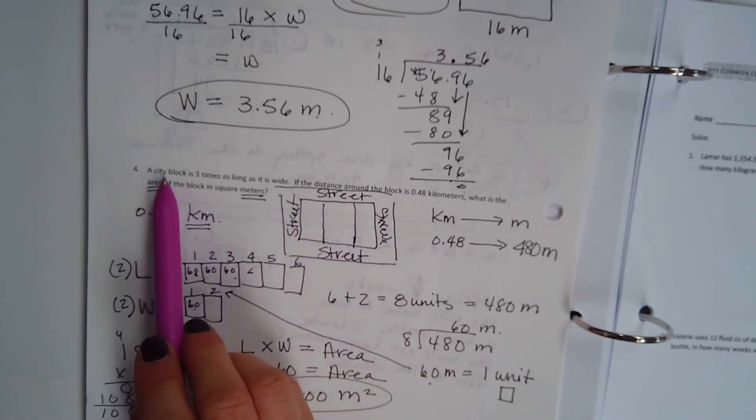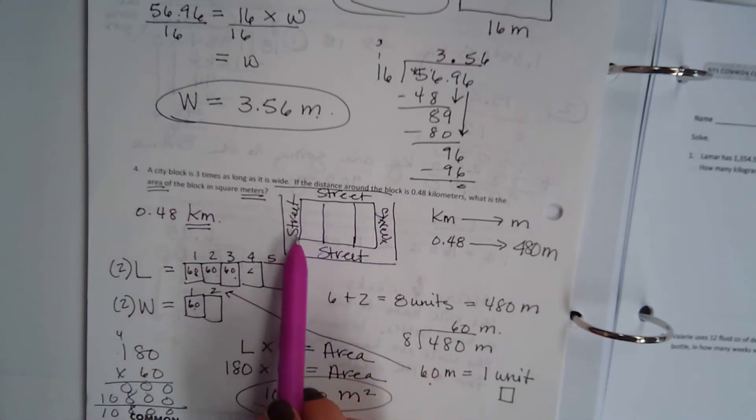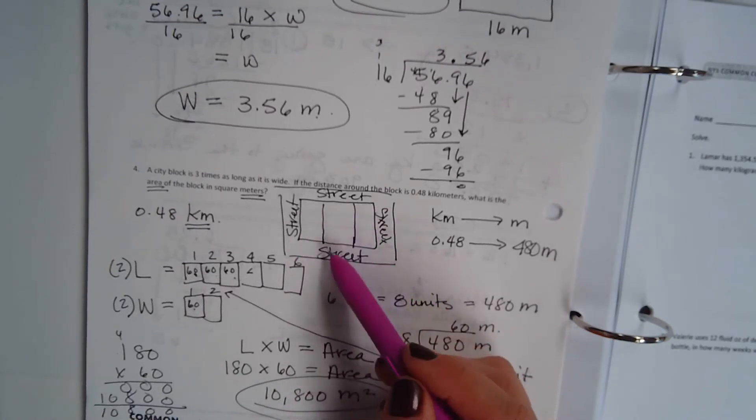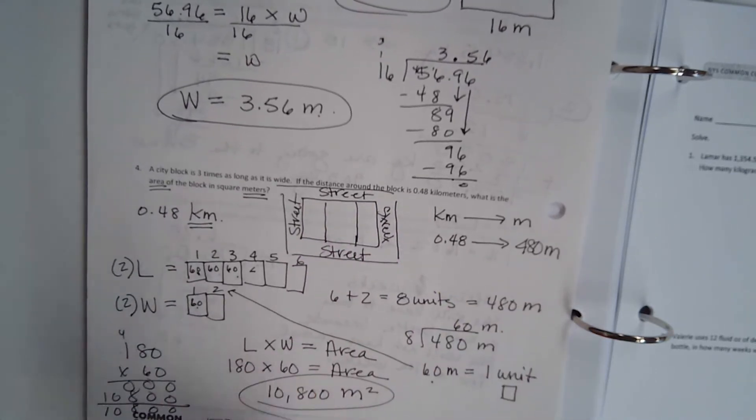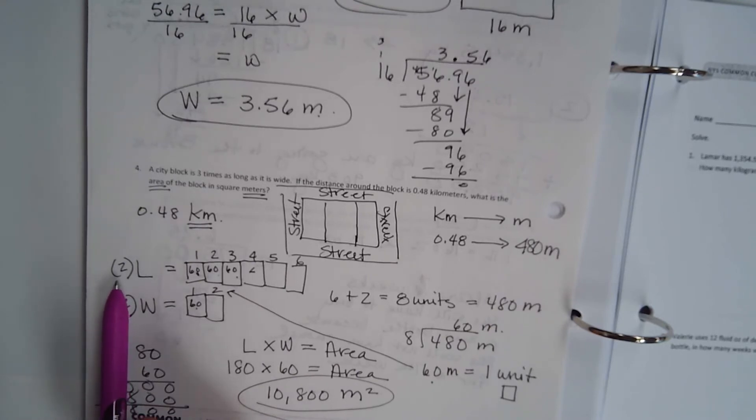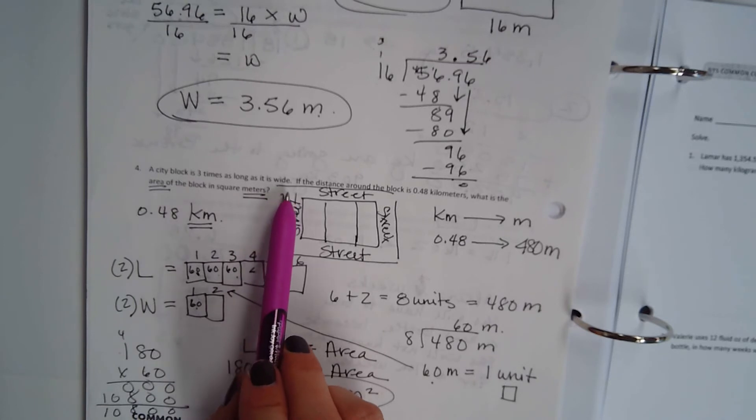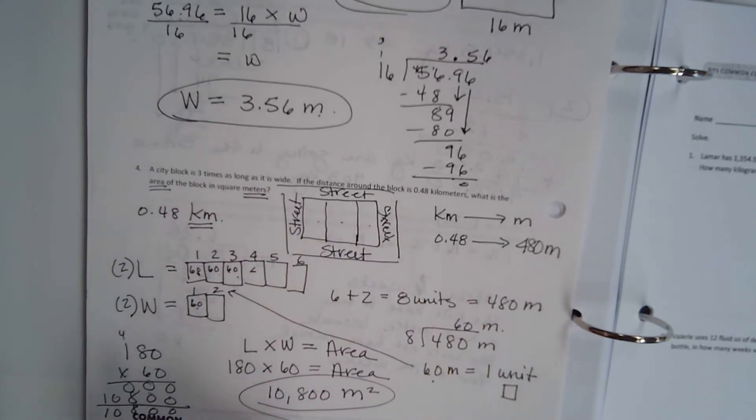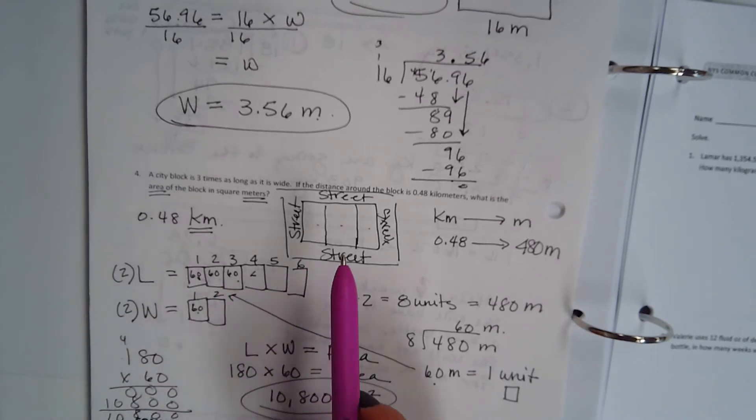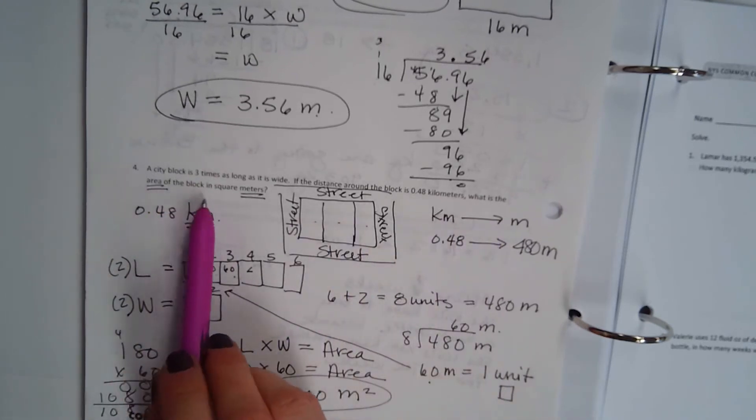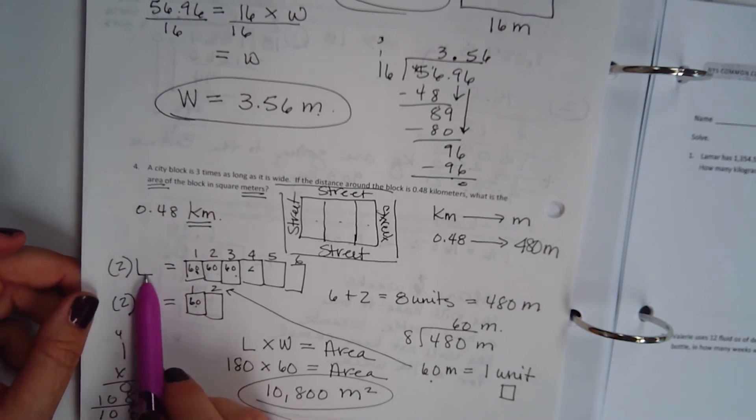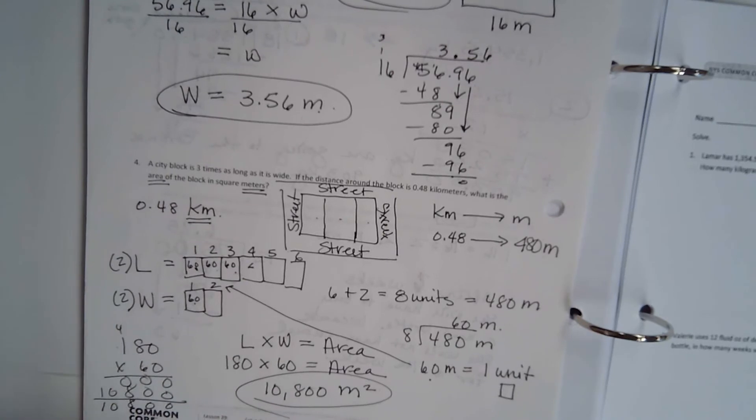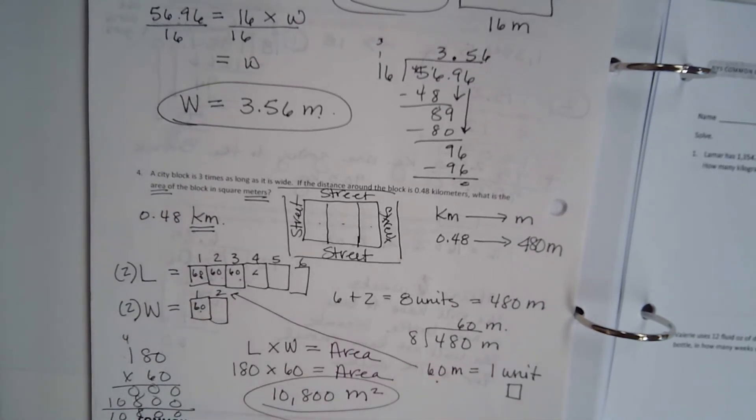Now, what is the area of the block in square meters? Remember the area is what we're trying to solve for, the inside. It's like an area rug. An area rug is the inside of the rug. So we have a city block is three times as long as it is wide. So that's why I have it broken up into three units. We know that two times the length and two times the width. That's what we're trying to solve for. So take a second, and I want you to wrap your head around this problem.